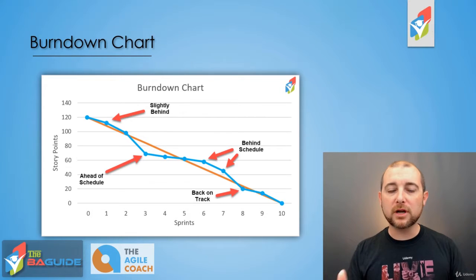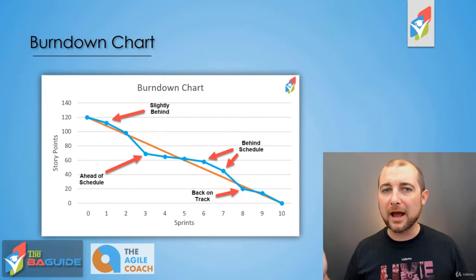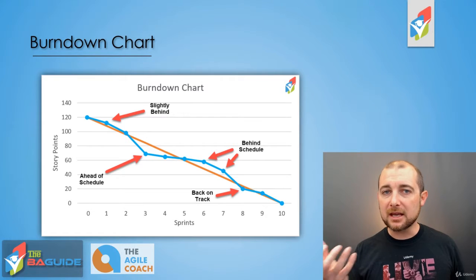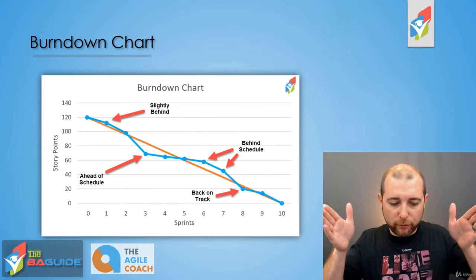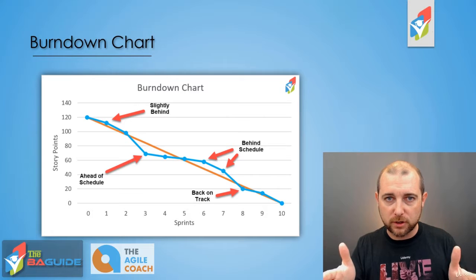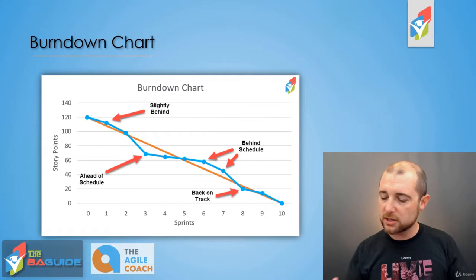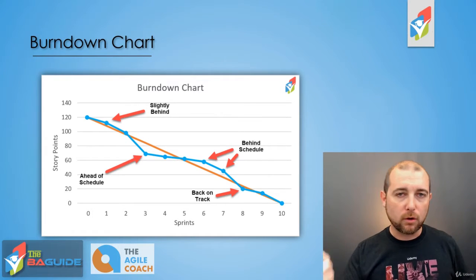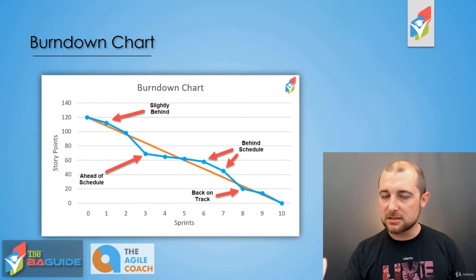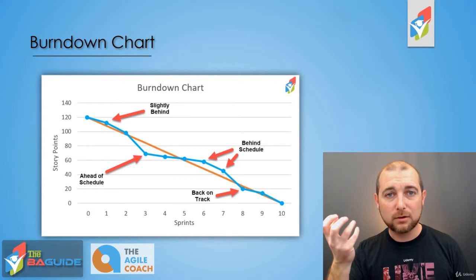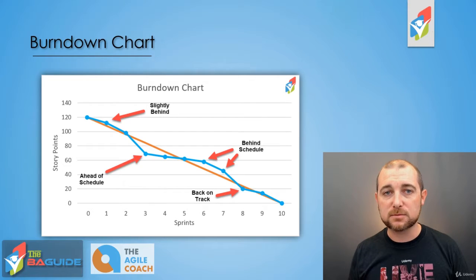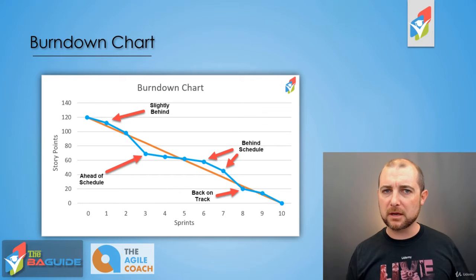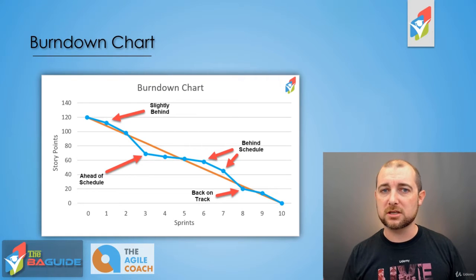As you can tell, this burndown chart is very helpful to a project team so they understand where they're at in the grand scheme of things. In a Scrum project, you're so focused on that particular sprint — so narrowly focused on working hard to get those requirements, design, development, and solution created, tested, and ready to be delivered at the end of that sprint — that you're not really focusing on the big picture. So it's really easy to get lost in where the project is overall.